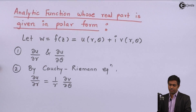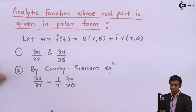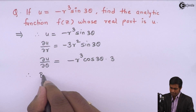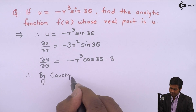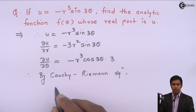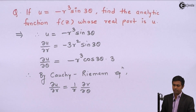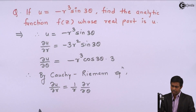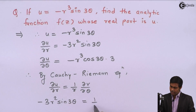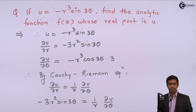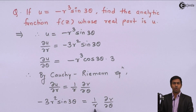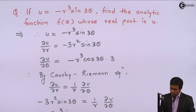We use the Cauchy-Riemann equation since f(z) is analytic. By the Cauchy-Riemann equation, ∂U/∂R = (1/R) ∂V/∂θ. Substituting the value of ∂U/∂R: -3R² sin(3θ) = (1/R) ∂V/∂θ. Taking R to the left-hand side, we get ∂V/∂θ = -3R³ sin(3θ).